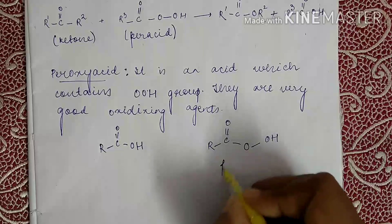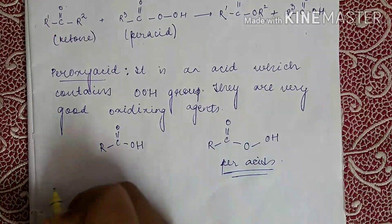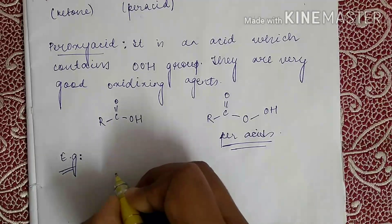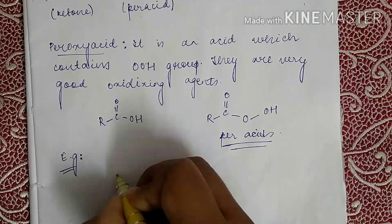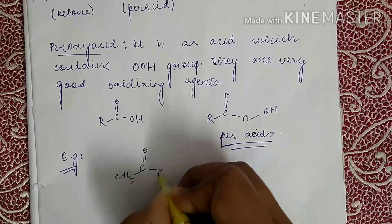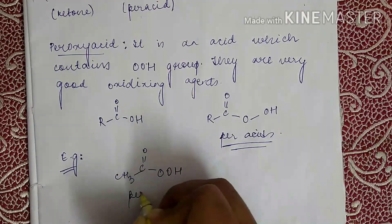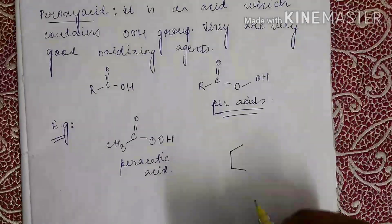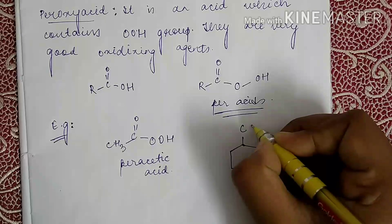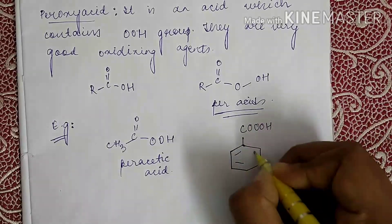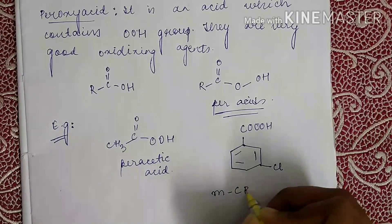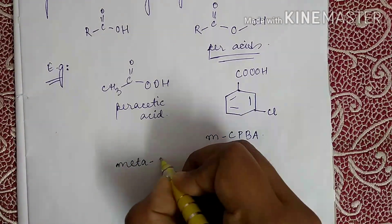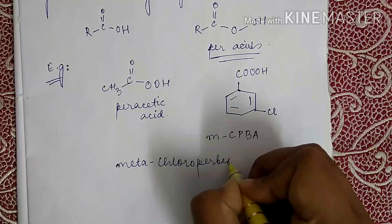Coming to the examples of per acids: if you substitute the R group with CH₃ (a methyl group), then we will have peracetic acid, that is CH₃-C(=O)-OOH. Another example is MCPBA, also known as meta-chloroperoxybenzoic acid.